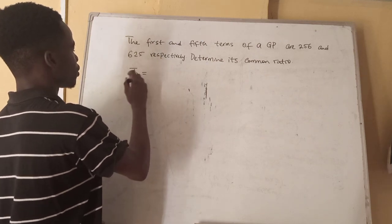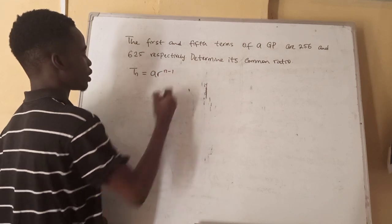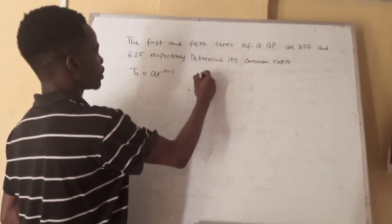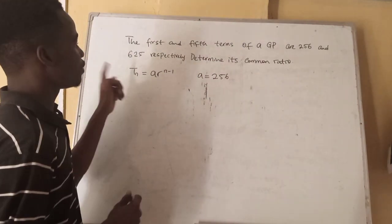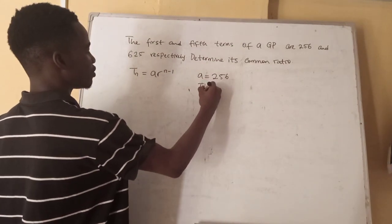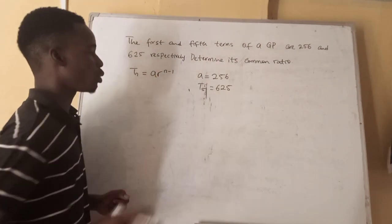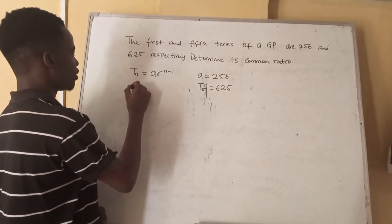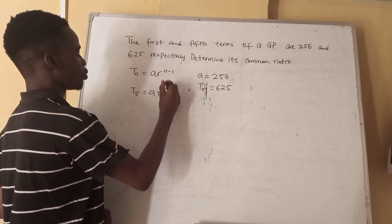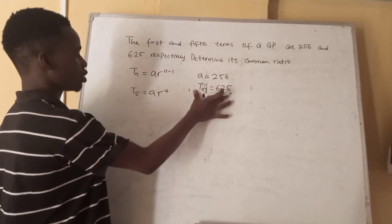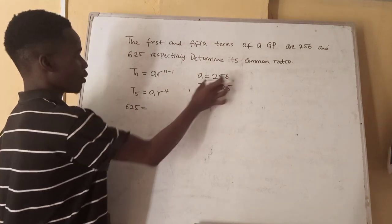The general formula for finding the number of terms of a GP is given as AR raised to the power n minus 1. From the question we have been given our first term A equal to 256, then the fifth term T5 equal to 625. We've been asked to find the common ratio. So T5 is equal to AR raised to the power 5 minus 1, which is 4.